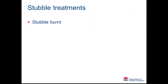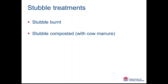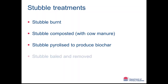Stubble treatments the industry can adopt: traditionally stubble is burnt, as rice produces a large quantity of biomass and leaving it in the field can prove difficult for subsequent agricultural operations. We are also looking at a non-standard method of treading the stubble — removing it and composting it off-site with cow manure. Additionally, we are looking at producing a biochar through pyrolysis of the stubble, and lastly baling the stubble and removing it for other purposes.